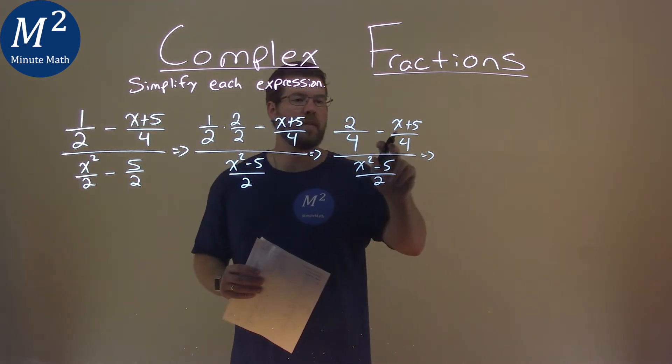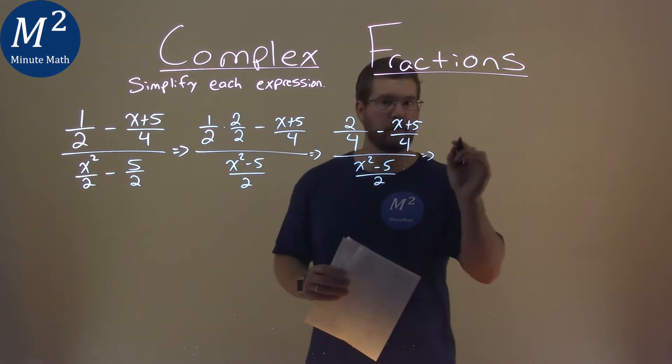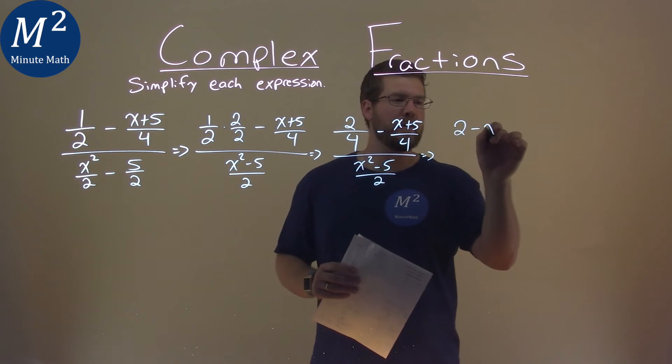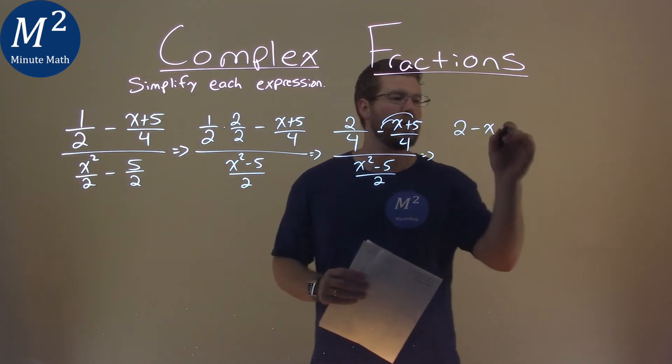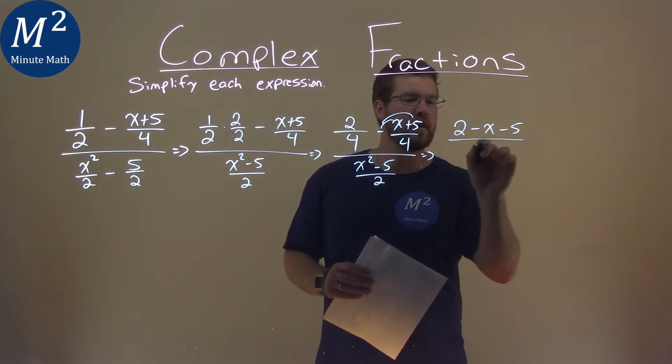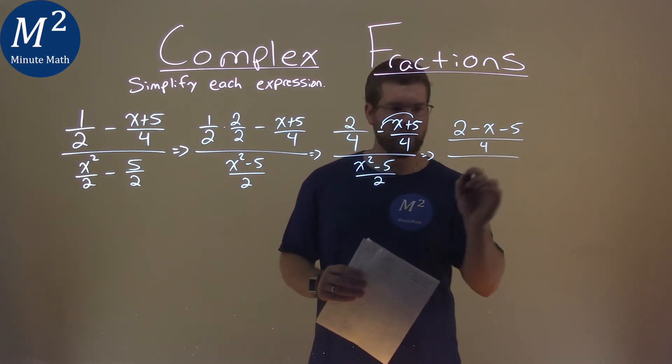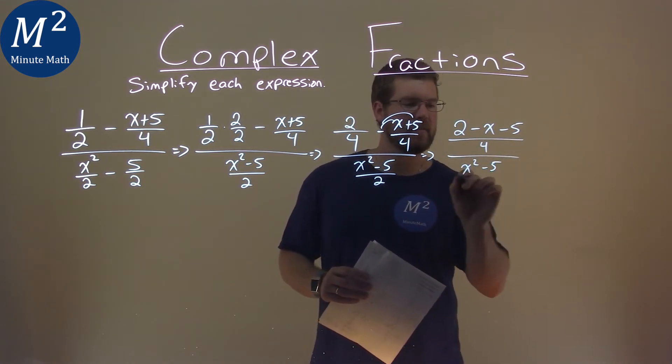Well, now we have a 4 on the base right here. So we can combine this to be one fraction. We have 2 minus x, right? We're minus the x, distribute this minus sign into both parts, and minus a 5 over 4 over x squared minus 5 over 2.